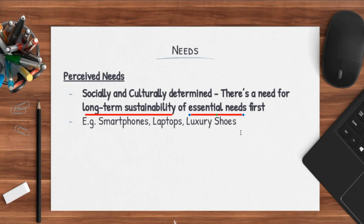You also have to realize that perceived needs can be socially and culturally determined. For example, in schools you see a lot of kids in primary school have iPhones and smartphones, and one reason is because it's actually a social norm — if I have a phone and you don't, then you're considered weird. So in a sense, perceived needs — to you — may not actually be a need at all, but because of societal pressures, you're actually required to get certain things.